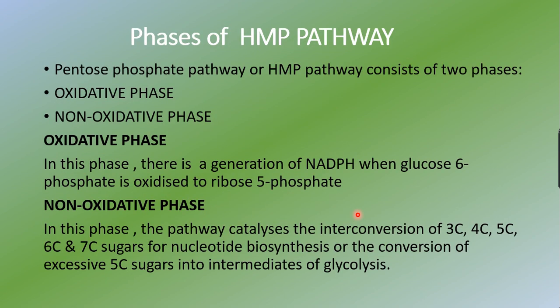Now let's look at the phases of the HMP pathway. The HMP pathway has two phases: one is called the oxidative phase and the other is called the non-oxidative phase. In the oxidative phase, there is generation of NADPH when glucose-6-phosphate is oxidized to ribose-5-phosphate. In the non-oxidative phase, the pathway catalyzes the interconversion of 3-carbon, 4-carbon, 5-carbon, and 6-carbon sugars for nucleotide biosynthesis, or the conversion of excess 5-carbon sugars into intermediates of glycolysis.